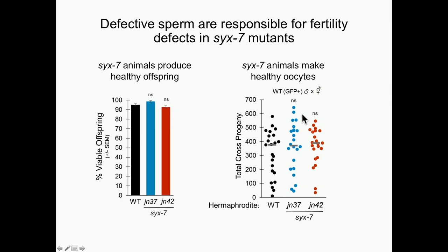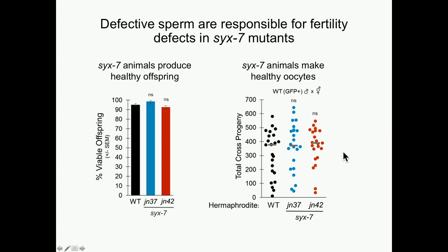Next, I wanted to test if 6-7 mutant animals had healthy female germlines — do they make healthy oocytes? I crossed wild-type males, marked with GFP to distinguish cross progeny, to hermaphrodites and asked if providing normal sperm could rescue the fertility defects. It did. This was a really exciting experiment because it says that as long as animals have normal sperm, they're capable of normal fertility — confirming it was truly a sperm defect.